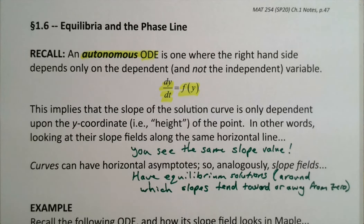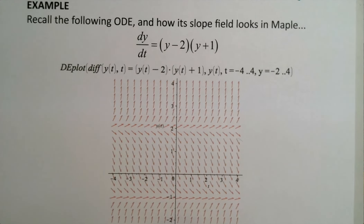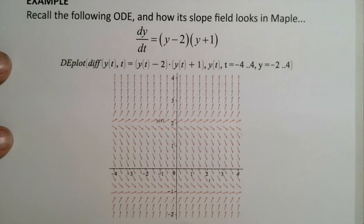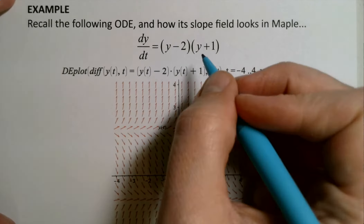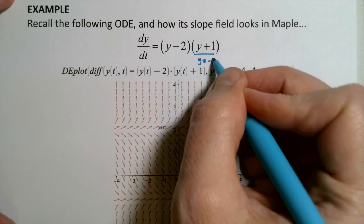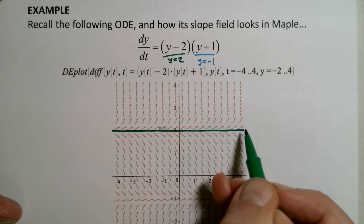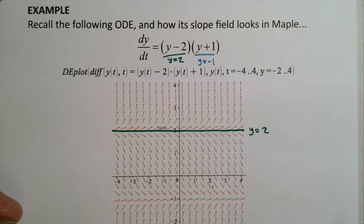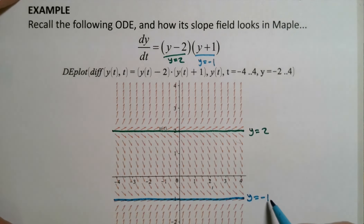We're going to take a look at a familiar example — we just finished discussing this in section 1.5. If we take a look at this familiar ordinary differential equation, this differential equation has two equilibrium solutions: one at y equals negative one, and the other at y equals two. We can see these on the slope field — one here, which we call the y equals two equilibrium solution, and another down here, which we call the y equals negative one equilibrium solution.